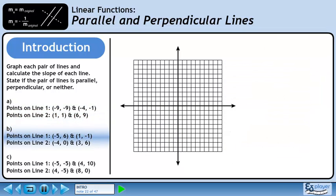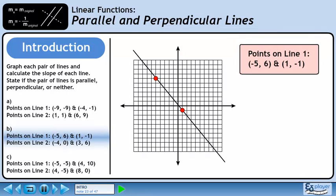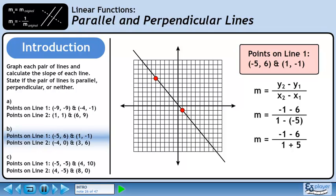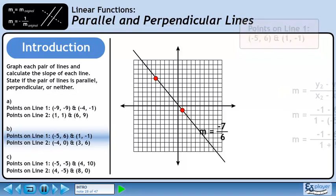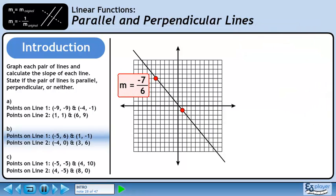In part B, we'll graph another two lines and determine if they're parallel, perpendicular, or neither. Plot the two points and draw the line. Now we'll calculate the slope using the slope formula. Plug the numbers into the formula. Clean up the double signs. The slope is minus 7 over 6. Let's store the slope beside the line so we can reference it later.